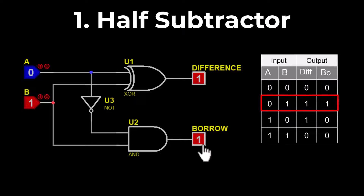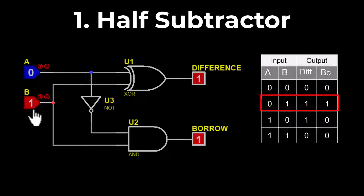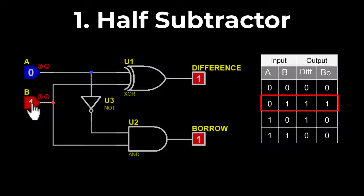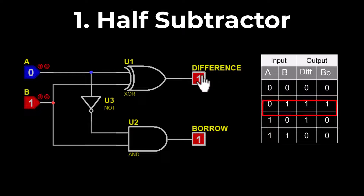Apply 0 and 0 — the difference and borrow out both will be zero. Apply 0 and 1 — the difference will be 1 and the borrow out also will be 1, because 1 can't be subtracted from 0, so we have to take a borrow of 1 from the next bit, making it 01, so the difference result will be 1.